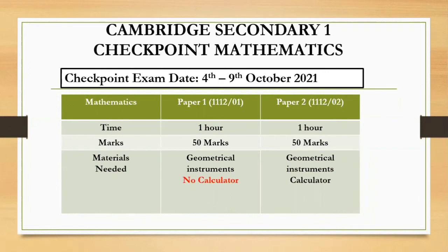I'm going to talk about Checkpoint Mathematics briefly. This is the mathematics paper code. Paper 1 will be 1112-01 and the code for Paper 2 will be 1112-02. The time for each paper will take one hour — that's the duration for each paper.